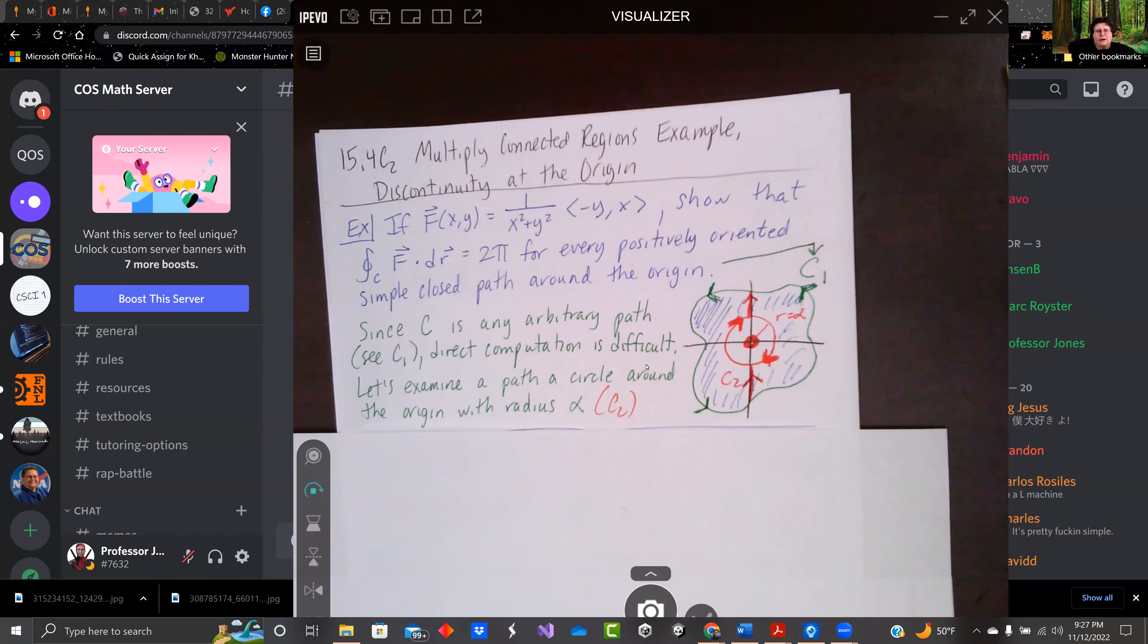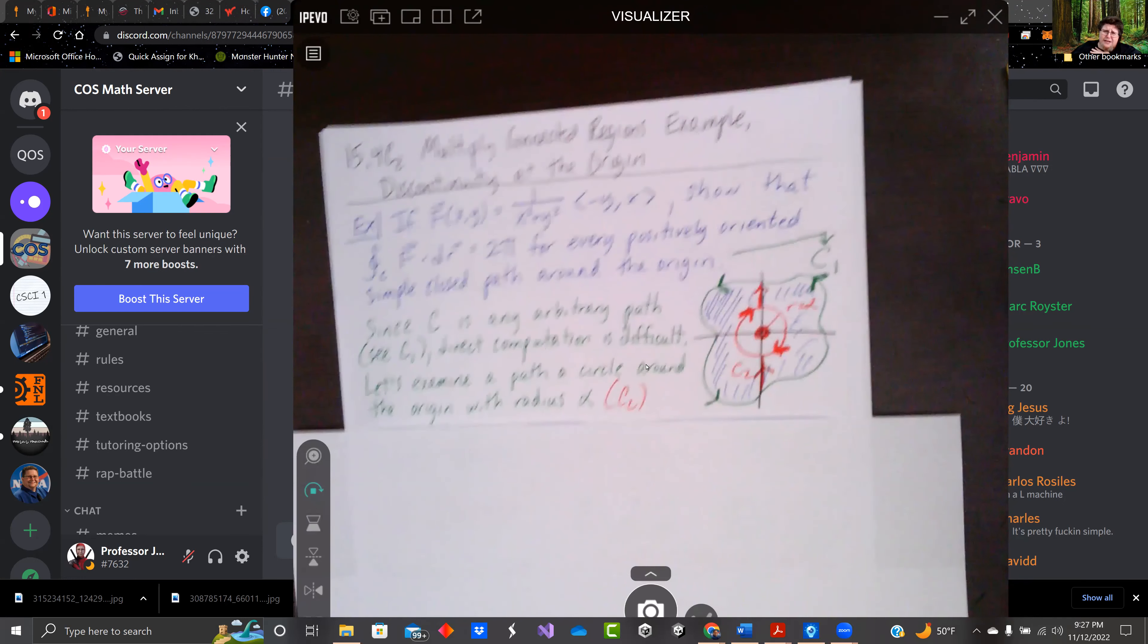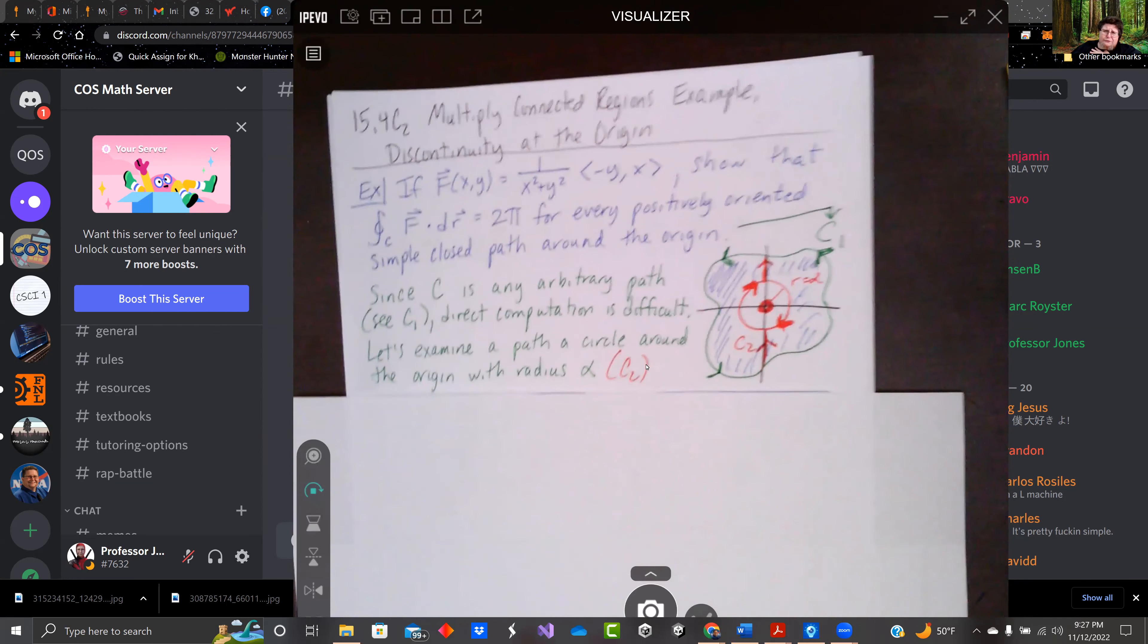Hey there everybody, welcome back. We were talking about using Green's Theorem in Calculus 3, 15.4 in our book, to analyze regions that are multiply connected by breaking it up. And we said it was oftentimes useful for discontinuities of the origin.